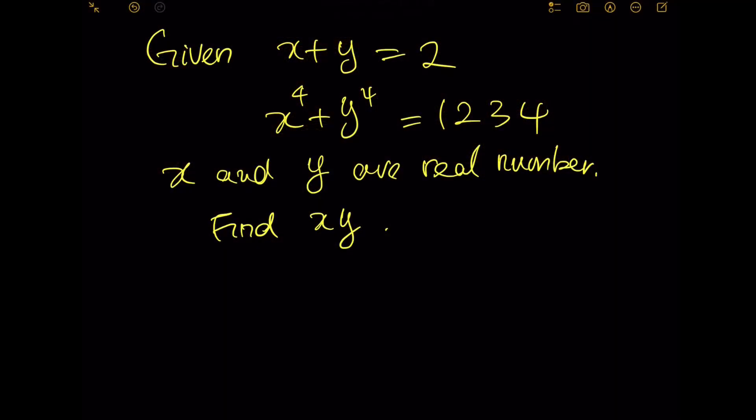Given x plus y equals 2, and x^4 plus y^4 equals 1,234, where x and y are real numbers, find the value of xy. We may start the solution by considering (x + y)^2.